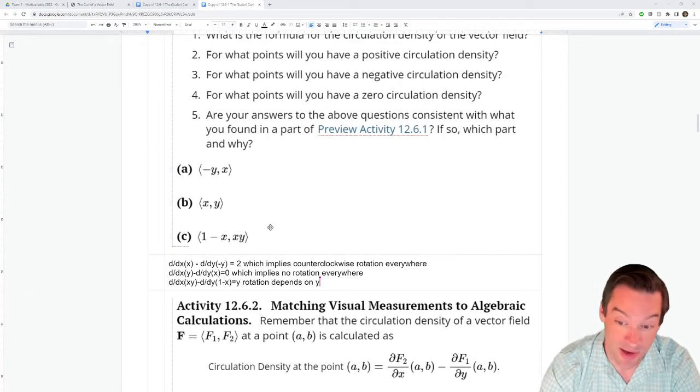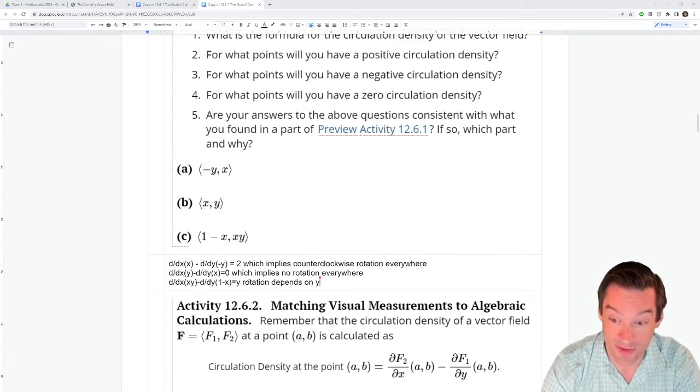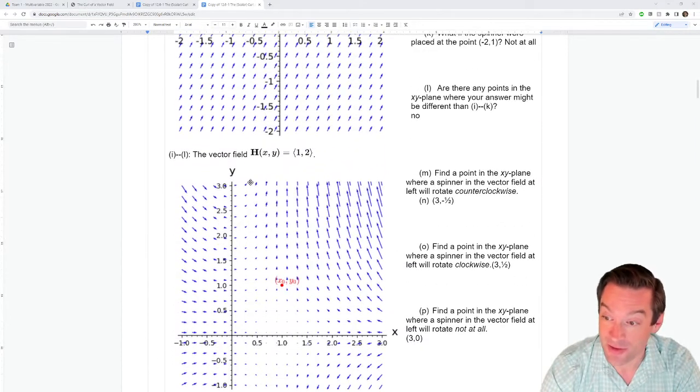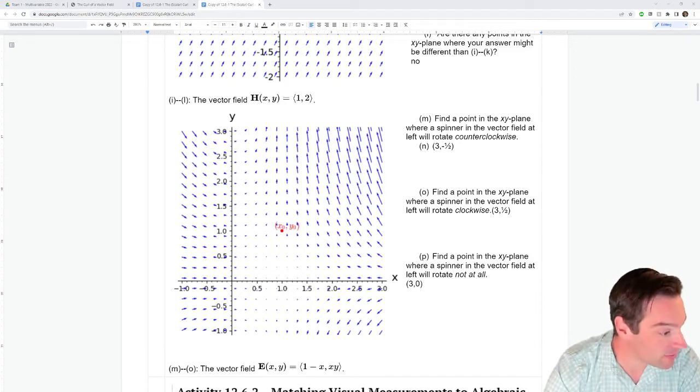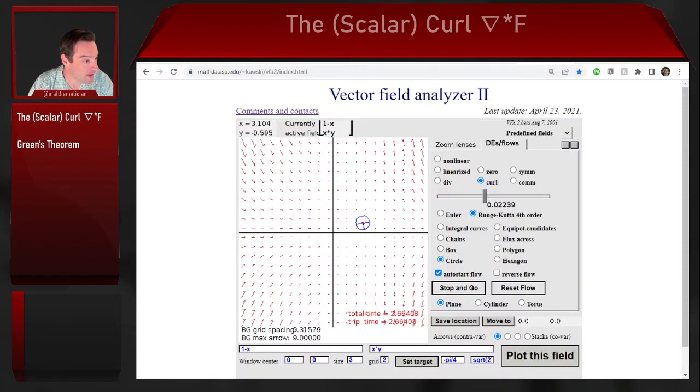The third one, one minus x comma xy, that one has a scalar curl equal to y. And so the rotation, which direction the rotation happens depends on y. And the particulars of that dependence is that for y values that were positive, we ended up getting counterclockwise rotations because the scalar curl is equal to y. And so when y is positive, we get counterclockwise rotation. When y is negative, we end up getting clockwise rotation. So all these places that are below the x-axis. And for those y values that are equal to zero, so the points that are exactly on the axis, that's where we get places that don't infinitesimally rotate at all.